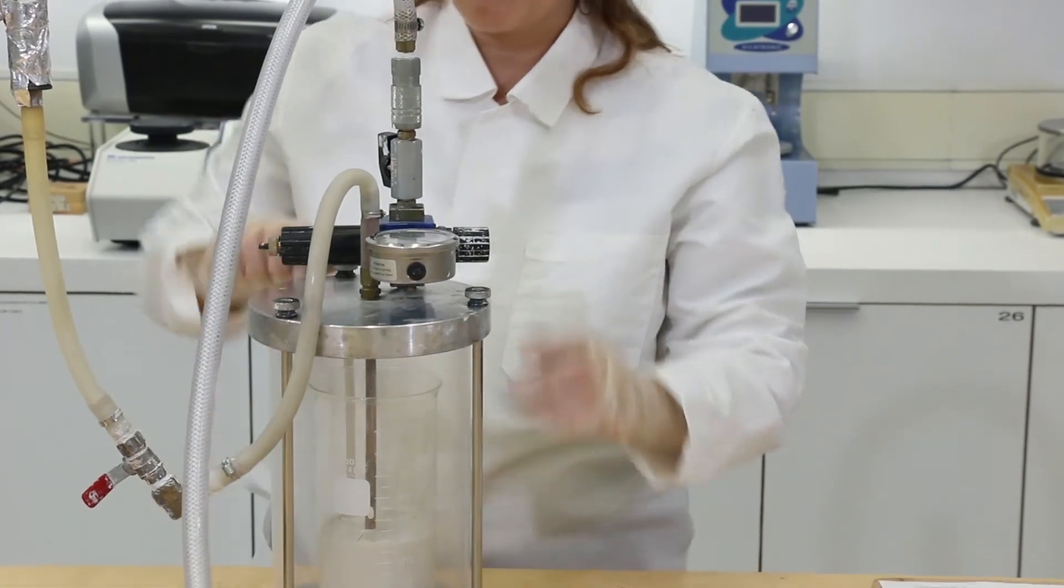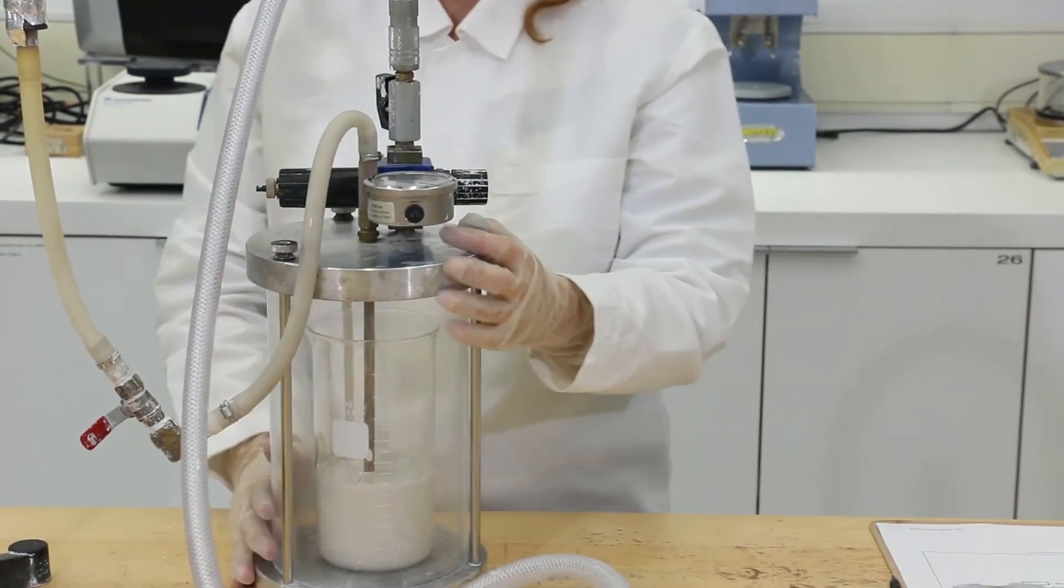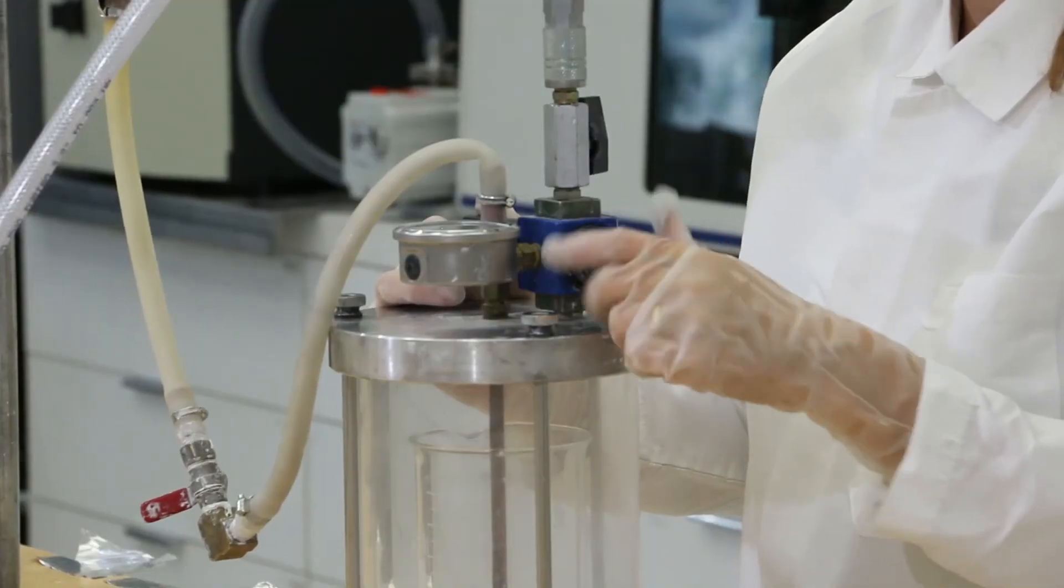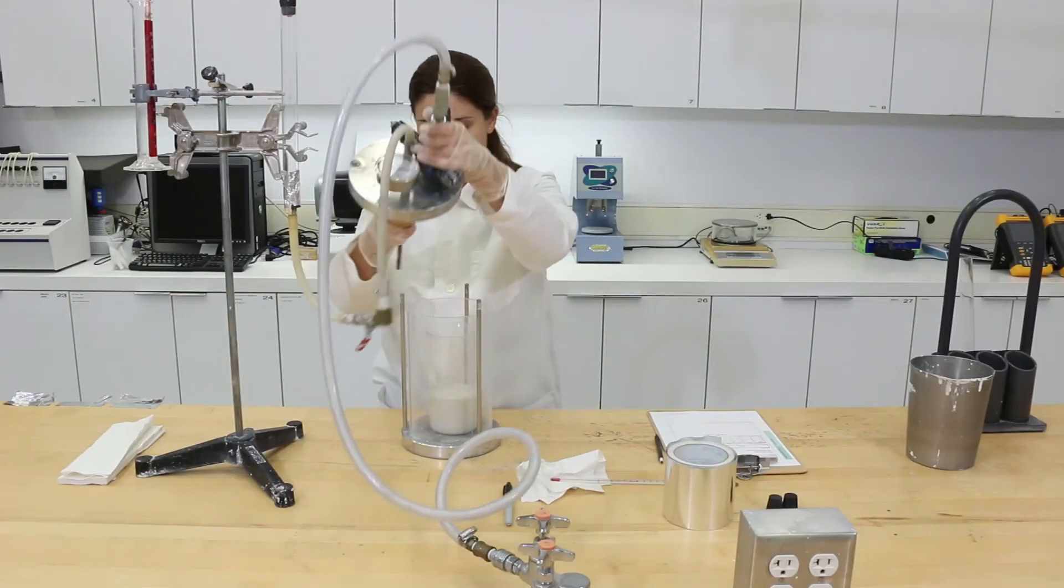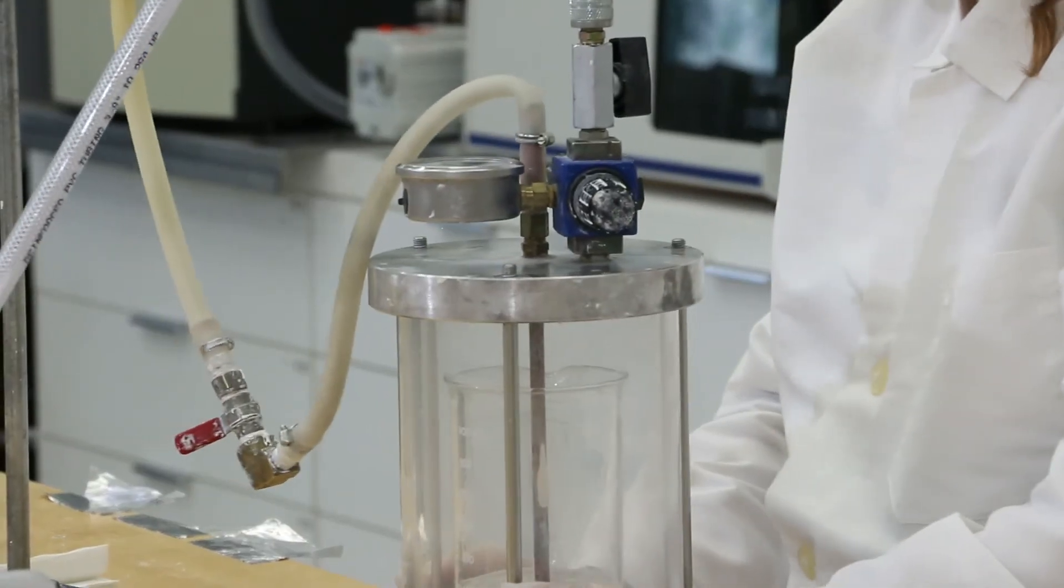Check the vessel for leaks. If the pressure in the vessel decreases, release the pressure, open the vessel, re-close it, and repeat the previous step.